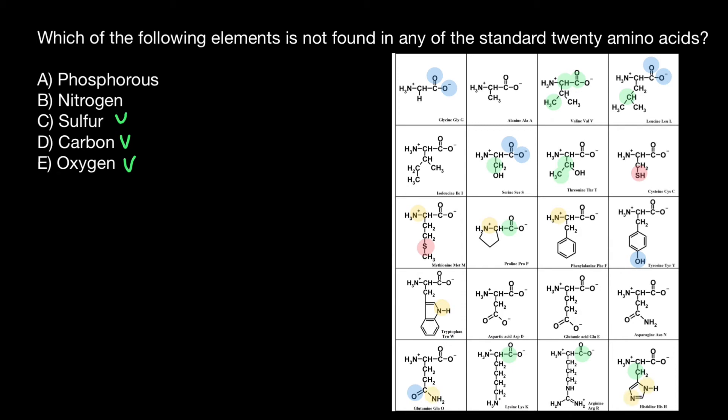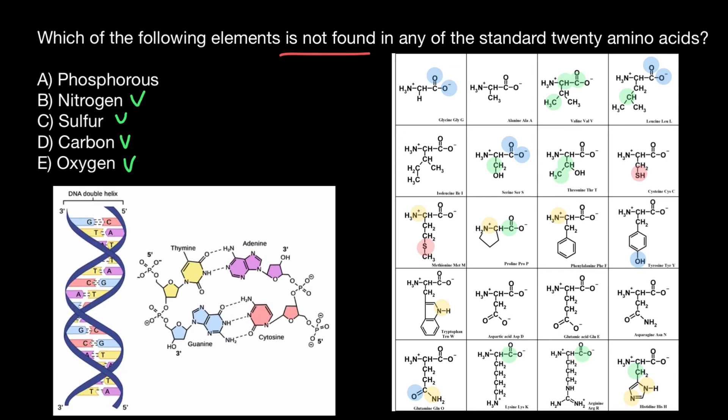The only variant left is phosphorus. Again, take a look - which of the following elements is not found in the standard 20 amino acids? Let's check if we have this element or not. If you would take a look, none of the 20 amino acids has phosphorus. But where is phosphorus present, because we know it is very important for our organism? Take a look at this picture.